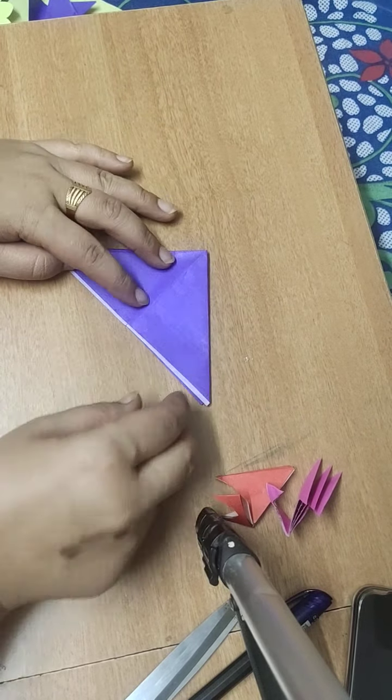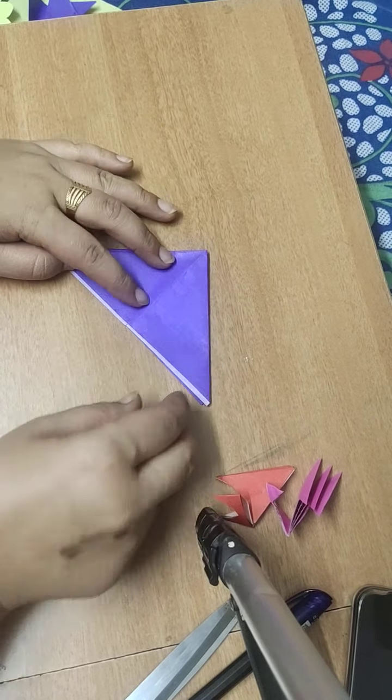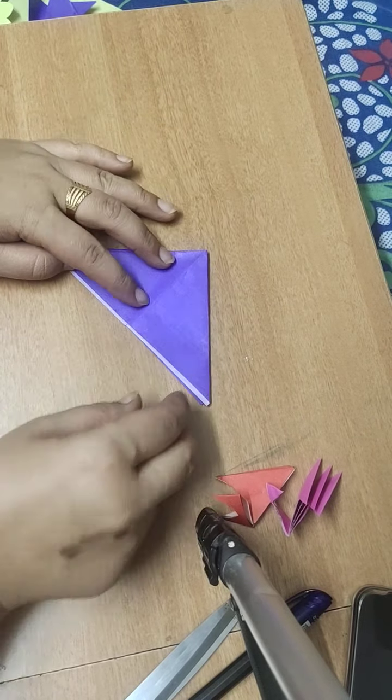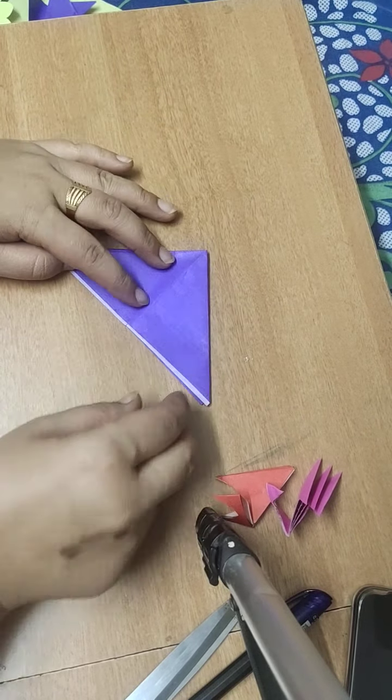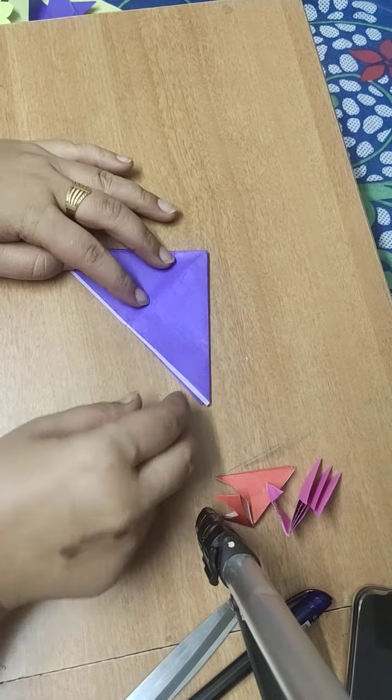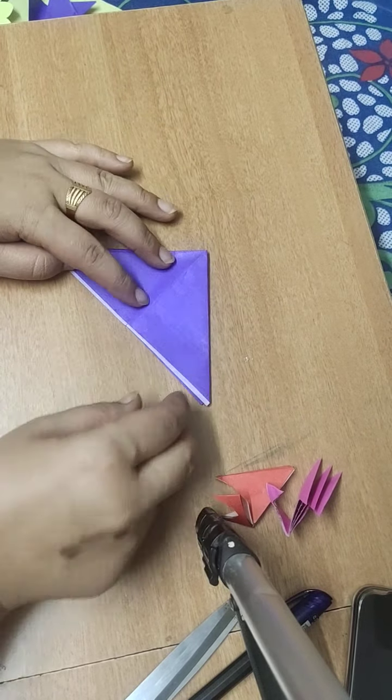And get it settle down. Get this triangle settle down here. Yes, here it is. We got this triangle. How? Open from this side and open from this side also. Clear.